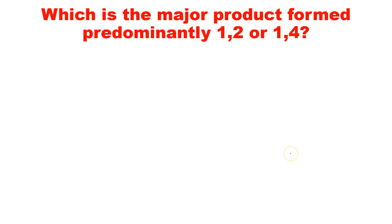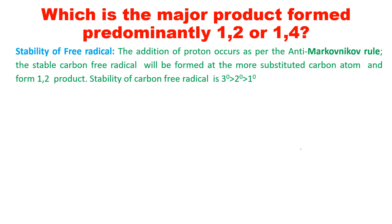Now the key question is which is the major product — 1,2 or 1,4. In the case of this radical reaction with conjugated dienes, we first consider the stability of free radicals. As we saw with carbocation stability, the stable carbon free radical forms at the more substituted carbon atom. Since secondary free radicals are more stable than primary, we get a kinetic product, that is the 1,2 addition product.